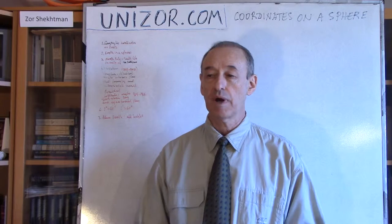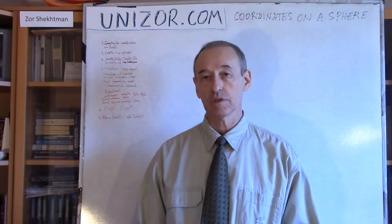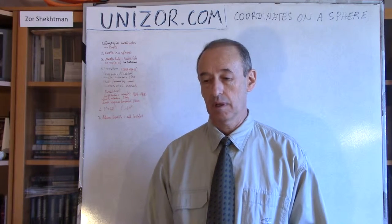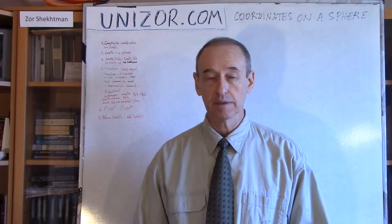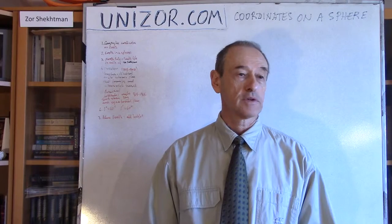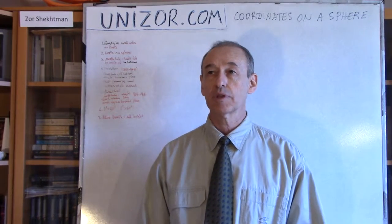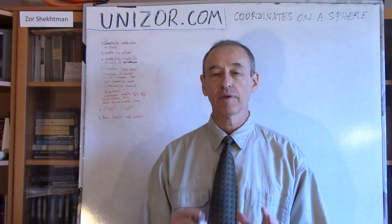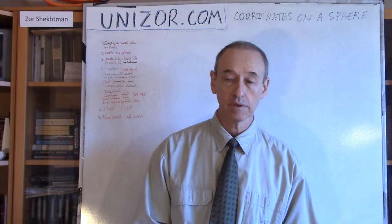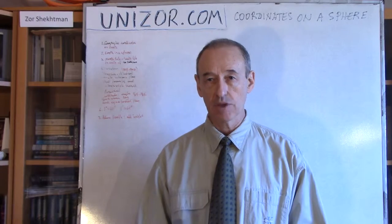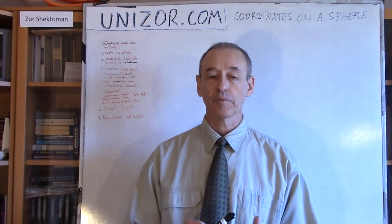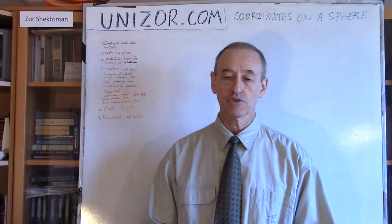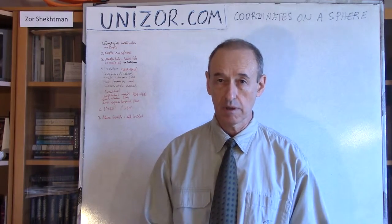So we have to identify our place, our location on a sphere. Obviously, the most important application of this is navigation on our planet, on Earth. First of all, let me just make a couple of assumptions. Assumption number one: I'm simplifying our planet to having a shape of an ideal sphere. Obviously it's not, and therefore for real navigation, whatever I'm talking about should be slightly modified.